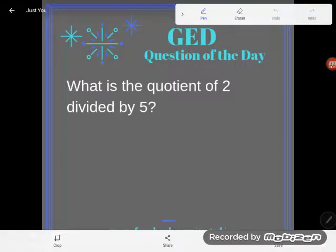Hey GED students, it's GED question of the day time and we've got a weird little question here. It says what is the quotient of 2 divided by 5? Now quotient does mean a division expression or an answer when you divide, so no new information there since it tells us 2 divided by 5.